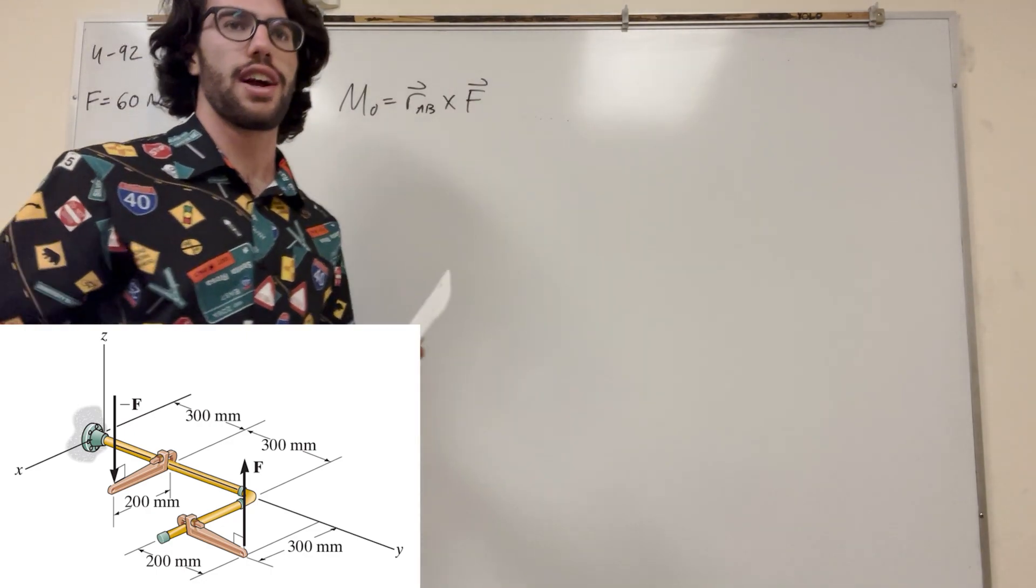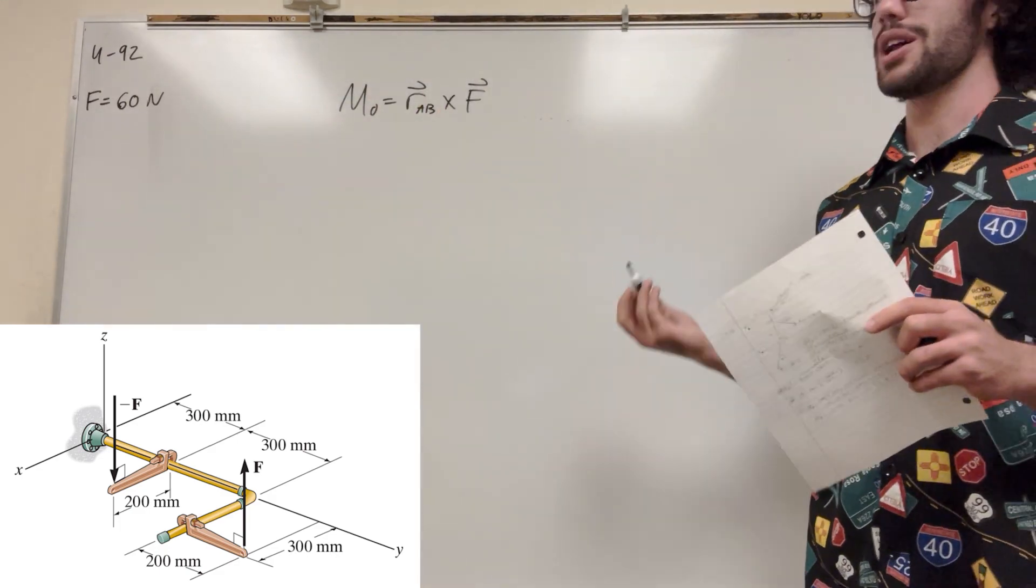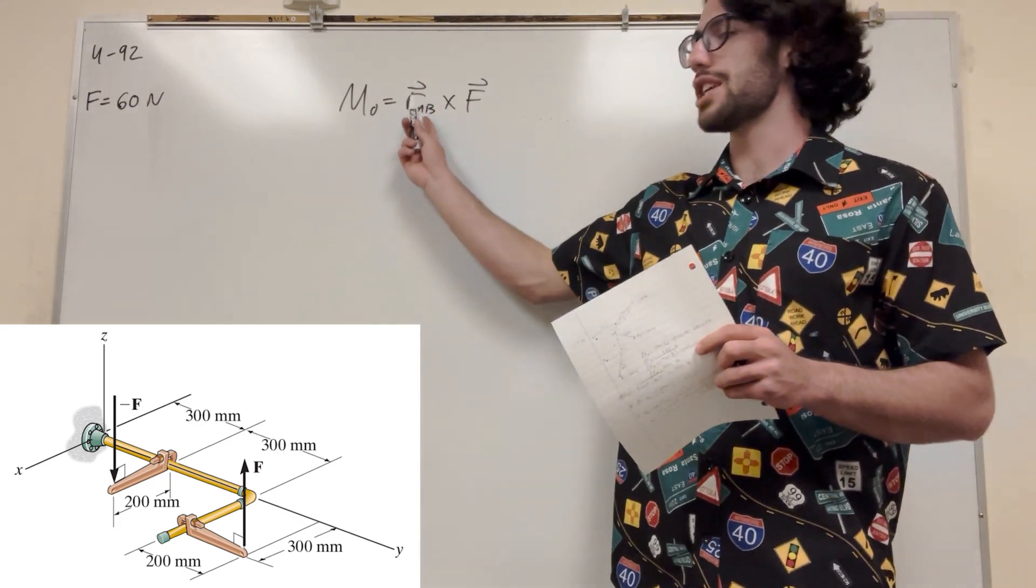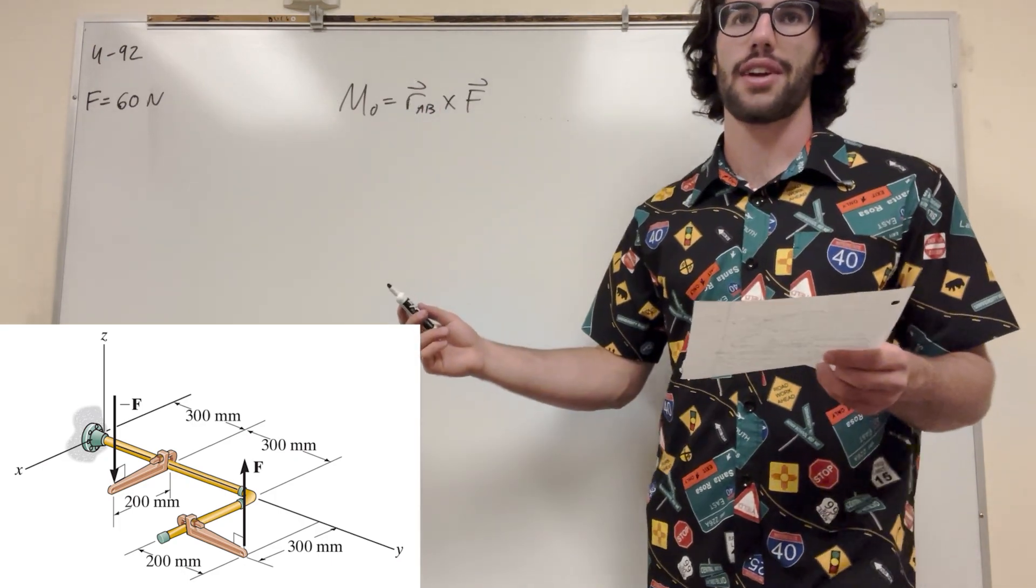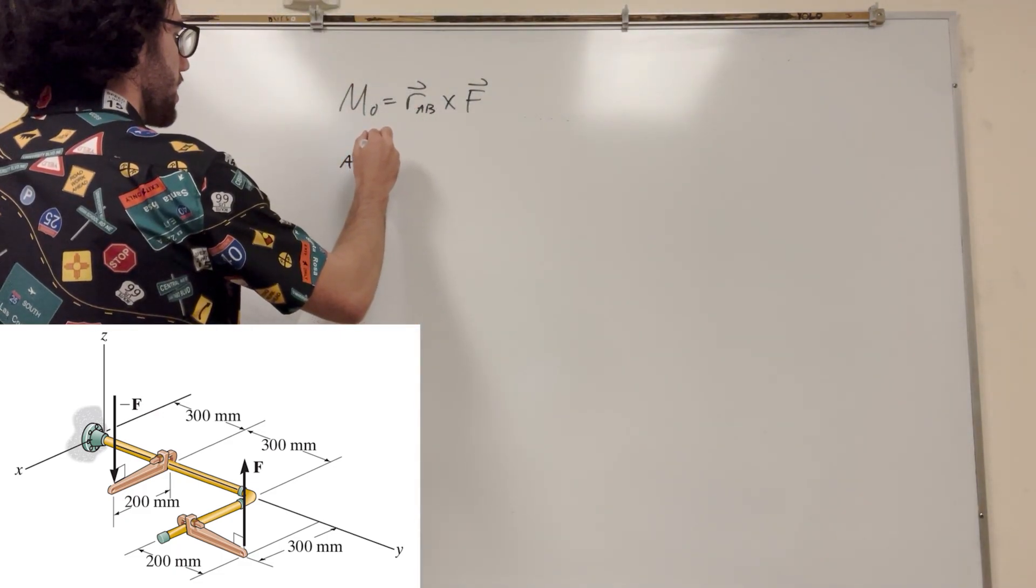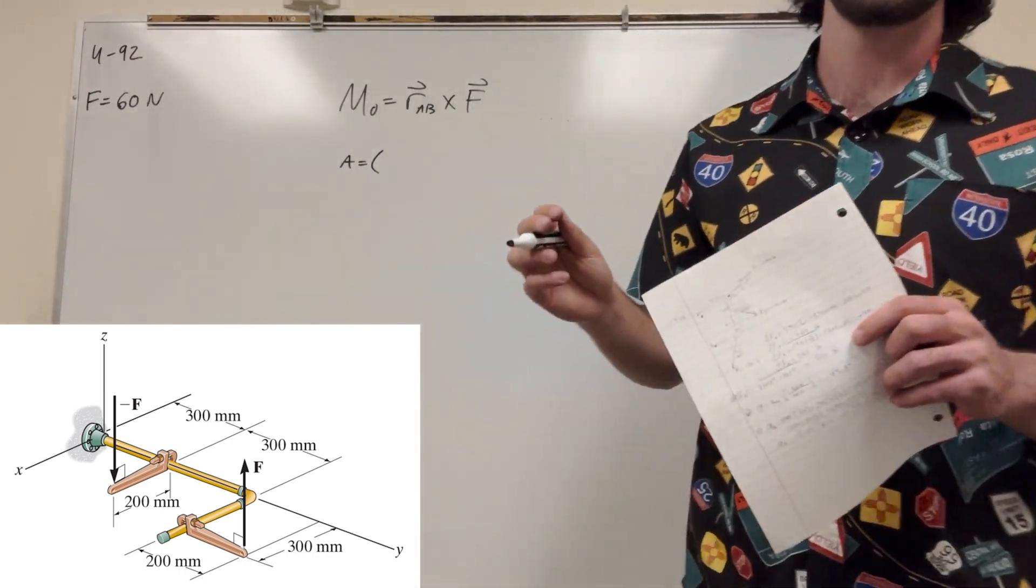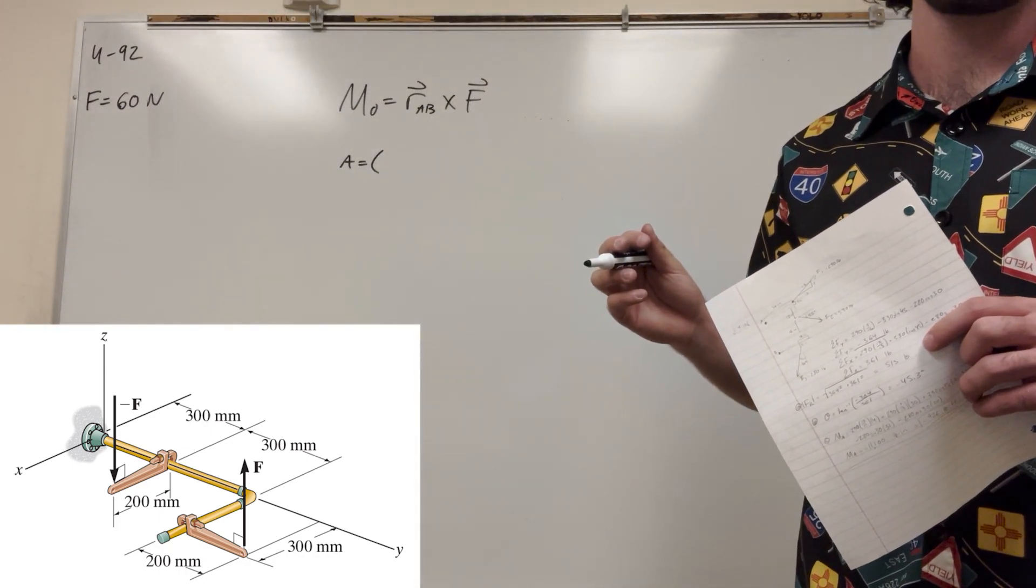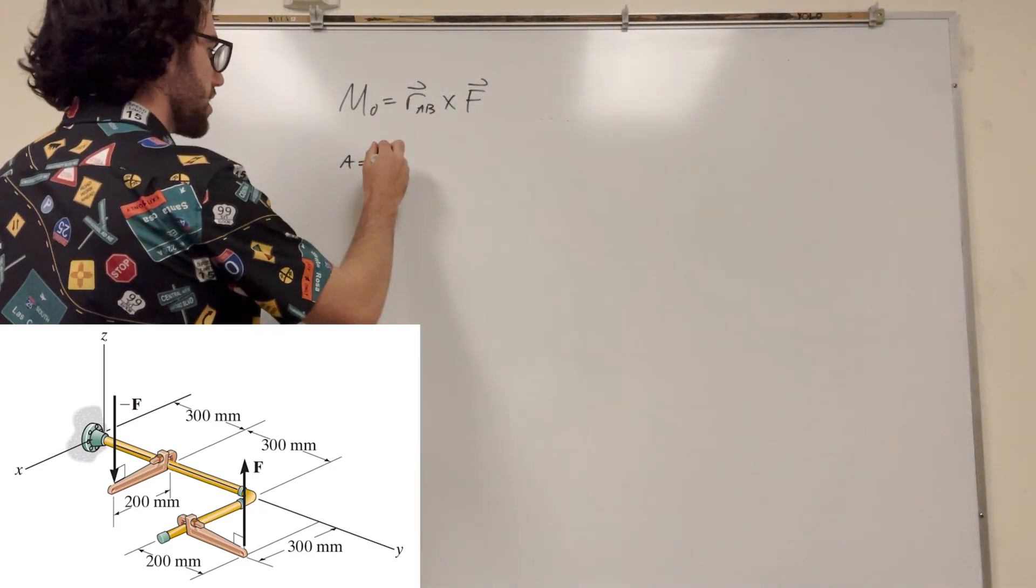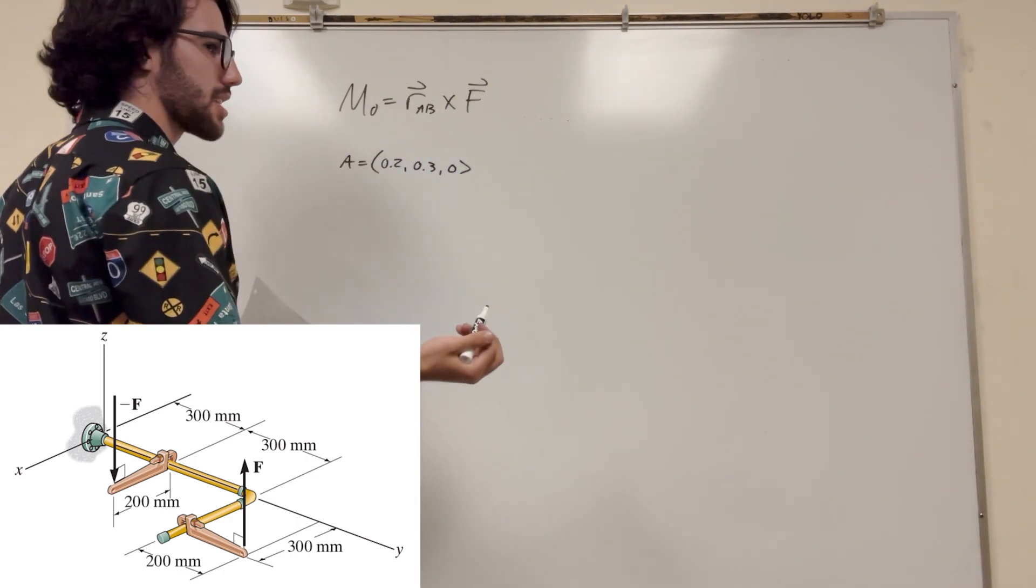So RAB is going to be a hard thing to find. We know that force is 60 newtons, and it looks like it's pushing straight up or down, so we know that it's just going to be 60 in the Z direction. So we need to find this position vector. So let's go ahead and write our coordinates. Let's label A to be our first point. It looks like it goes 200 millimeters in the X direction and 300 millimeters in the Y direction. So we can say that this is 0.2, 0.3, 0, because it doesn't go in the Z direction.